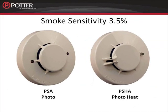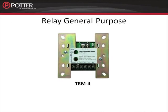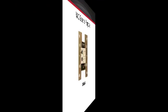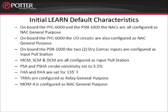The PSA is configured as a photo, and the PSHA is configured as a photo heat. The initial smoke sensitivity for these smoke detectors is 3.5%. The FHA is configured as heat fixed and the RHA is configured as heat combo. The initial alarm threshold for these heat detectors is 135 degrees Fahrenheit. The TRM module is initially configured as a relay general purpose, and the MOM4 is initially configured as a NAC general purpose device.